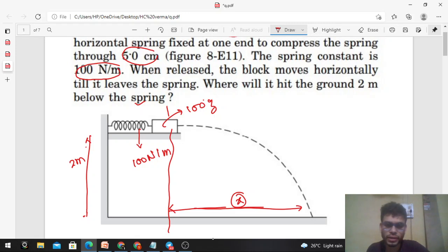So how to find out the speed of the block when it leaves the spring? Simple - conserve the mechanical energy. Mechanical energy of the block plus spring system - you have to treat it as a system. The only force acting is the spring force, so we can conserve the mechanical energy. Initial mechanical energy equals final mechanical energy.